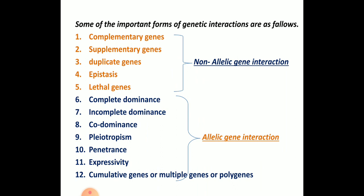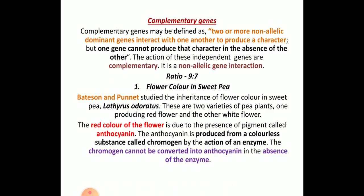In this session we will mainly concentrate on non-allelic gene interaction. The first type is complementary genes. In complementary genes, two or more non-allelic dominant genes interact with one another to produce a character. One gene cannot produce the character in the absence of the other. Both genes must be dominant for complementary action to be seen in the next generation. The ratio will be 9:7, and the example is flower color in sweet peas.